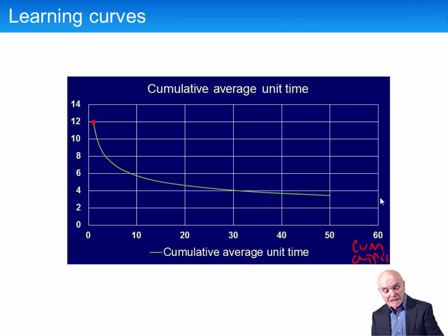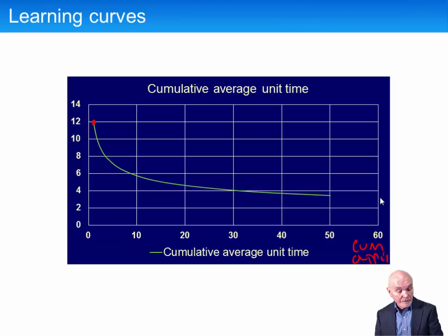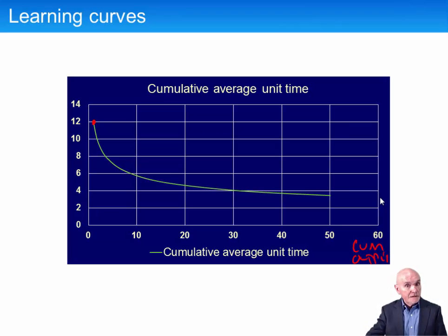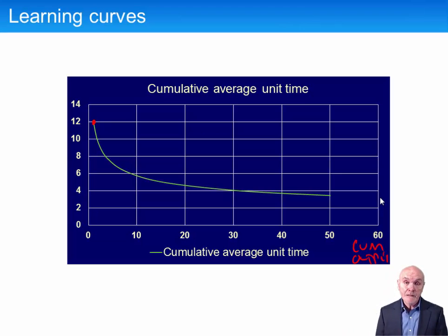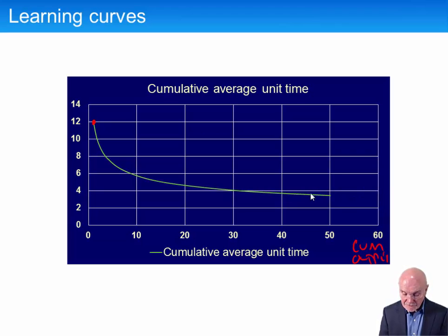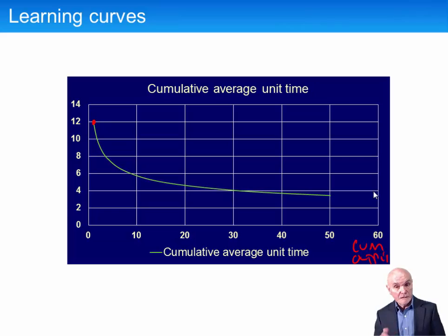It will hit a steady state — it will not keep improving indefinitely, even though the theory says otherwise. People simply can't move faster: it takes a certain amount of time to put in a screw, you can't run faster than you already are, glue takes time to set. There will also be some employee turnover. So at some stage out here on the curve, you have to hit the steady state, and that's what we'll look at next.